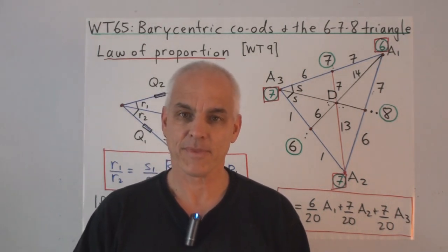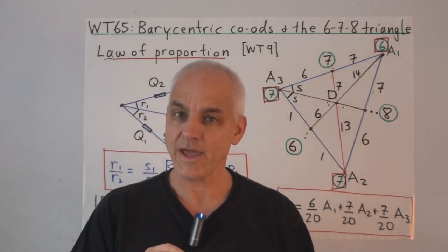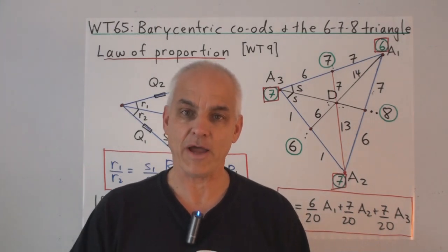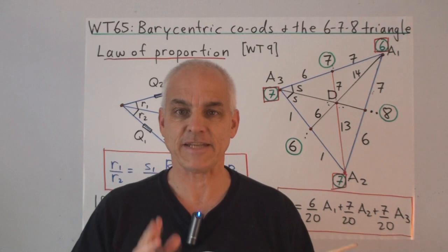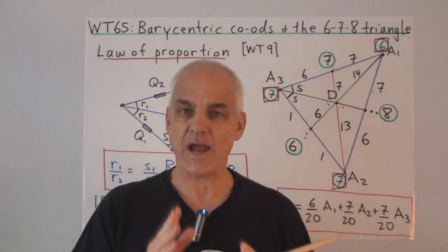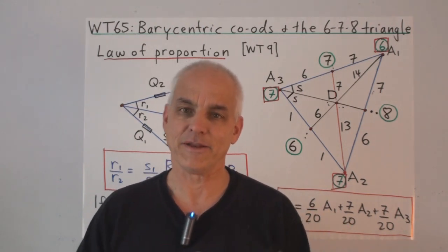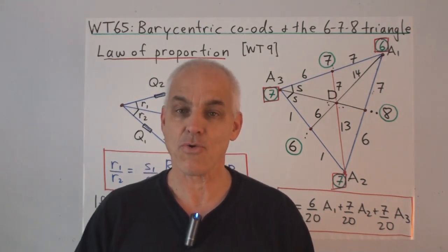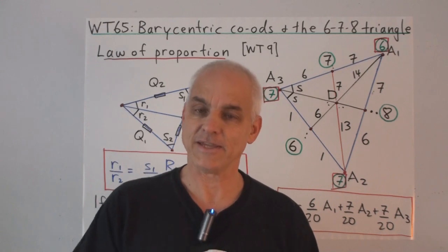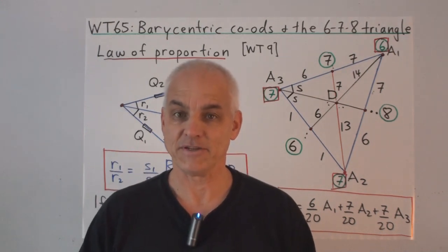Hi, I'm Norman Wildberger. Today we're going to have another look at the 678 triangle problem, which we solved last time in a rather standard way using rational trigonometry one triangle at a time. Today we're going to look at the same problem from the point of view of barycentric coordinates, which allows us in this case to simplify things considerably.